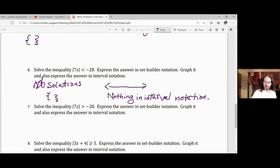Well, whatever you put in for x, you multiply it by 7 and take the absolute value of that. You're always getting something greater than or equal to 0, and 0 is always greater than negative 28.